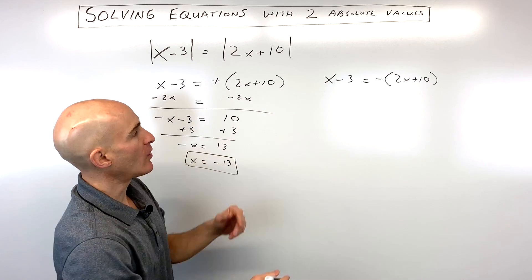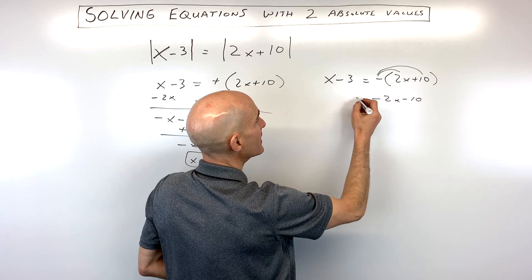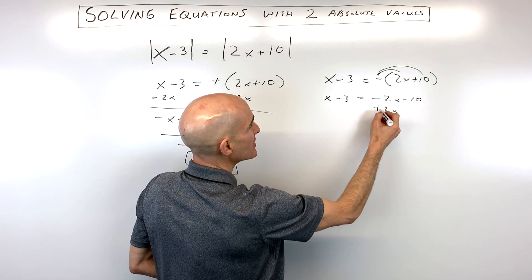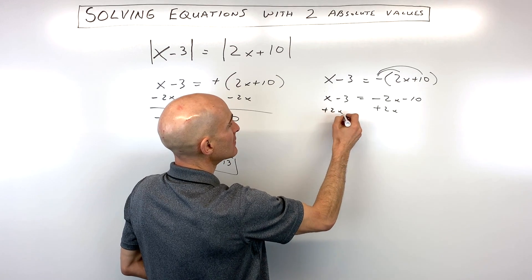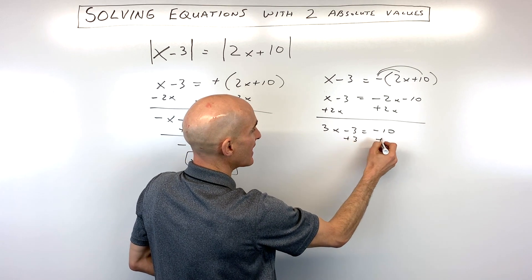Over here, I'm going to distribute the negative into the parentheses. So this is negative 2x minus 10 equals x minus 3. I'm going to add 2x to both sides. So that gives us 3x minus 3 equals negative 10. I'm going to add 3 to both sides.